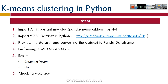So what are the various steps to implement the k-means clustering algorithm in Python? First, you will have to import all important modules like pandas, numpy, sklearn, and pyplot. Then you will have to import the iris dataset in Python. Then we'll preview the dataset, study it, and convert the dataset to a pandas DataFrame. We'll perform the k-means analysis in step 4. In step 5 we'll see the result — the clustering vector. We'll plot it and in step 6 we'll check the accuracy.